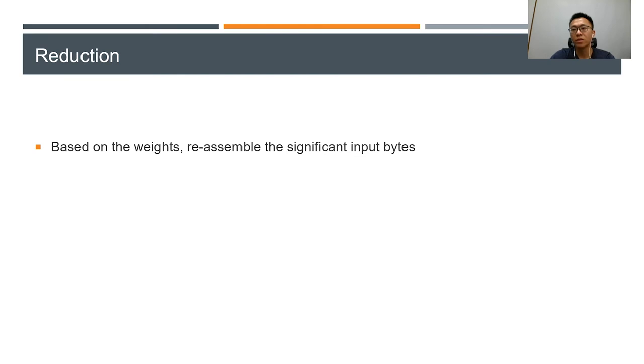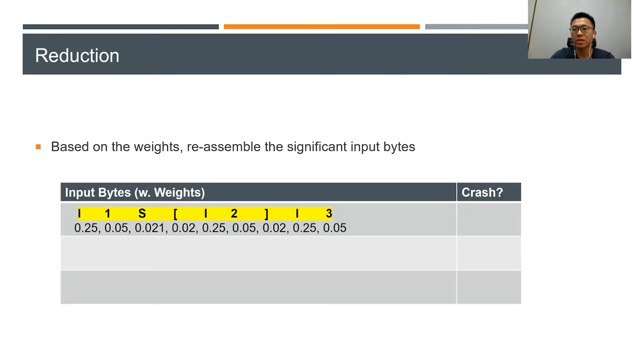Once we get the weight of input bytes, we reassemble the significant input bytes according to their weights. The reduction algorithm works like this. Assume that this is the original crash input with weights.